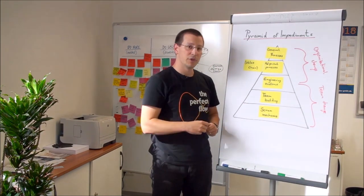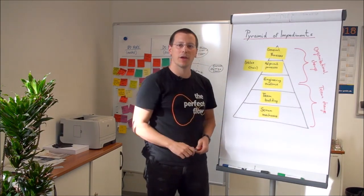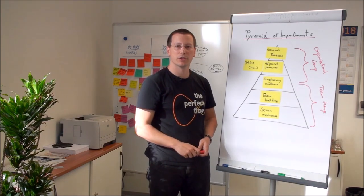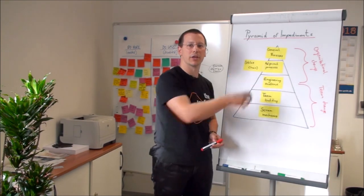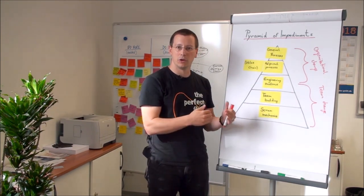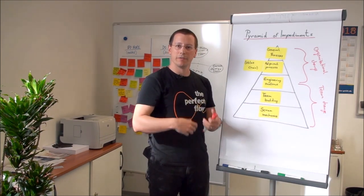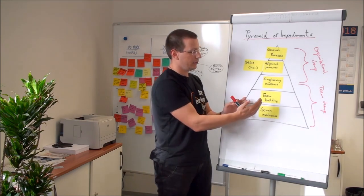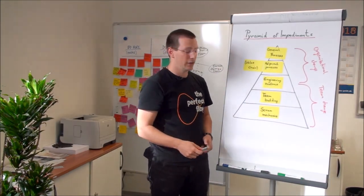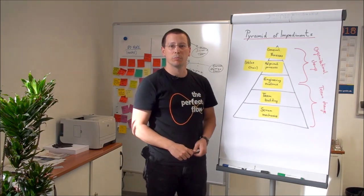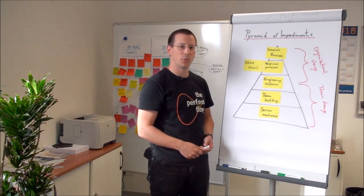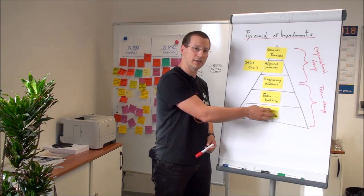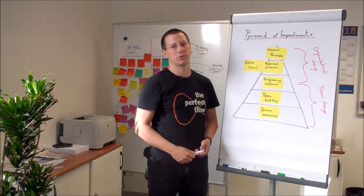Again, this pyramid symbolizes the amount of time a scrum master usually invests into the different impediment areas at the beginning of a team life cycle. If the team matures, the pyramid might stand on top. However, no area will ever be zero, because at every point in time, the scrum master will have to help with mechanics, with team development, and so on.